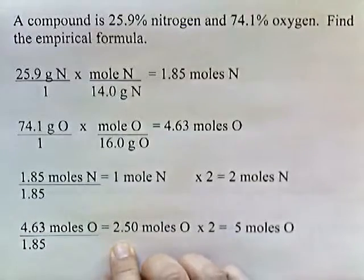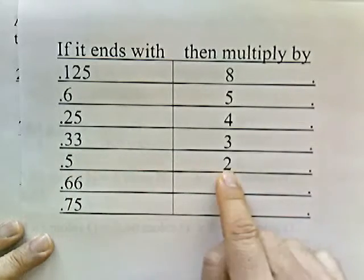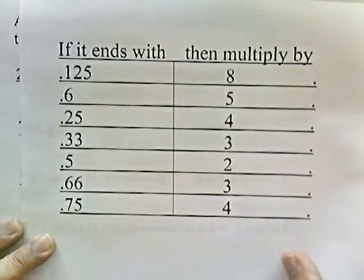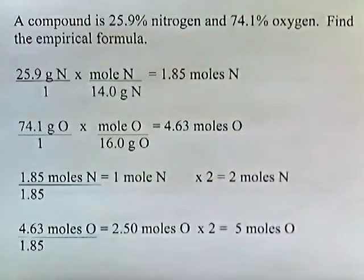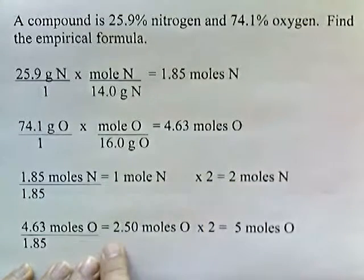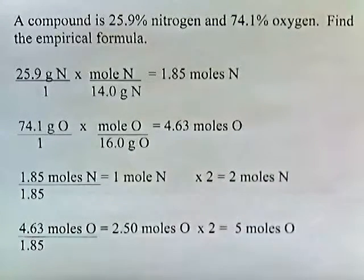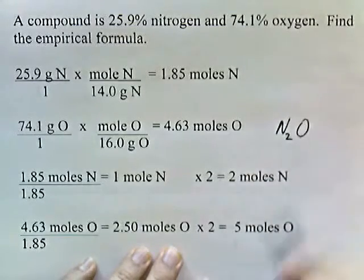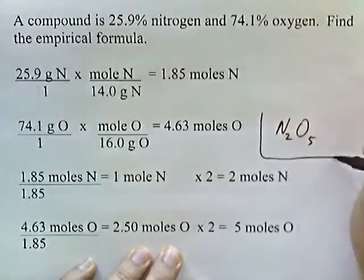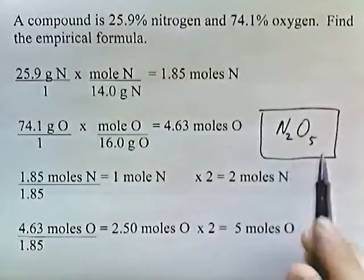So to get a whole number ratio, see how this ends in 0.5? Well, on our little if-then chart, if it ends in 0.5, multiply it by 2. So we're going to multiply both of these by 2. And then the whole number ratio, 1 times 2 is 2, 2.5 times 2 is 5. The whole number ratio is 5 to 2. So our empirical formula then is going to be N2O5. That's our answer. That's the empirical formula of our compound, the ratio of nitrogen to oxygen, 2 to 5.